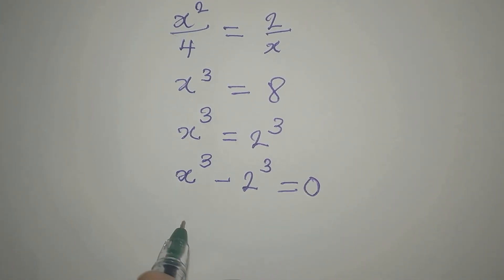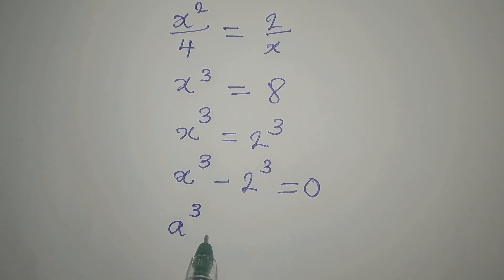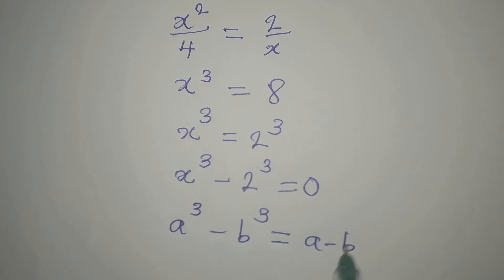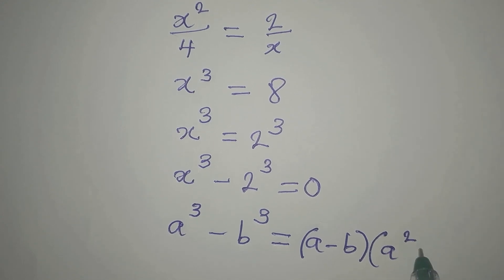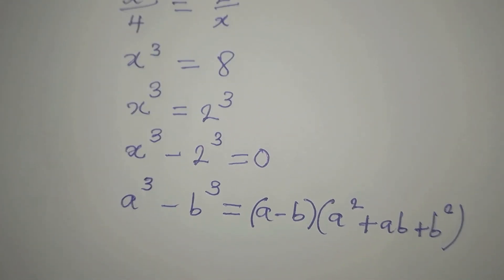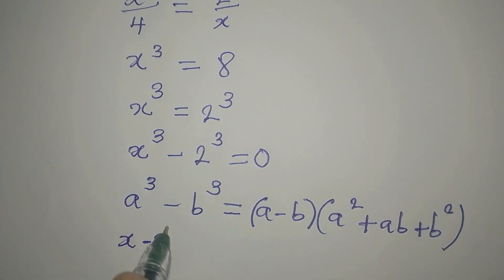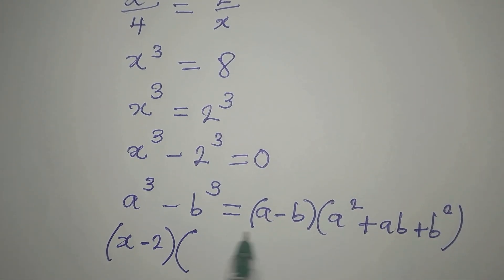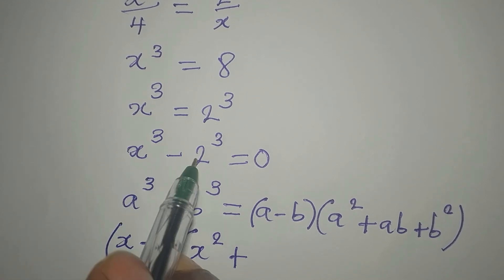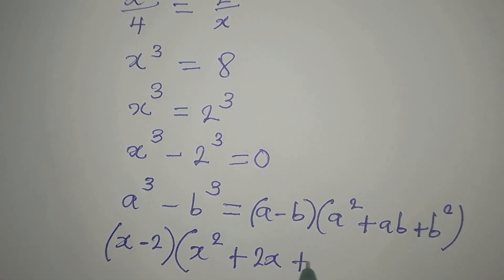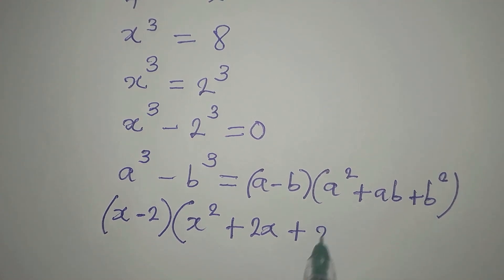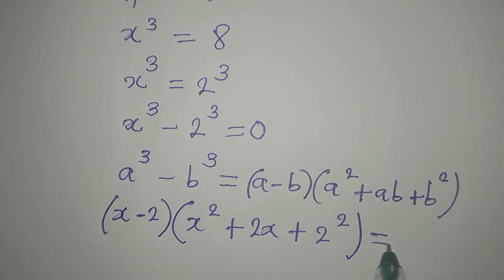The next thing I will do is to apply the difference of two cubes. If you have a to the power of 3 minus b to the power of 3, this is the same thing as (a minus b) times (a squared plus ab plus b squared). So if this is the case, then my a minus b will now be x minus 2, then a squared — that will be x squared — plus ab, that will be x times 2, which is 2x, then plus b squared, that will be 2 squared. And everything is equal to 0.